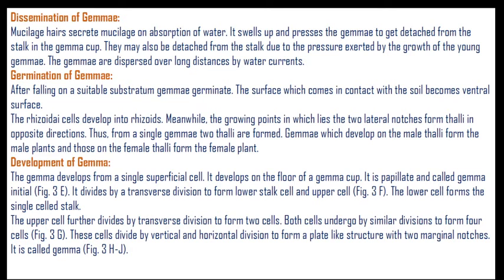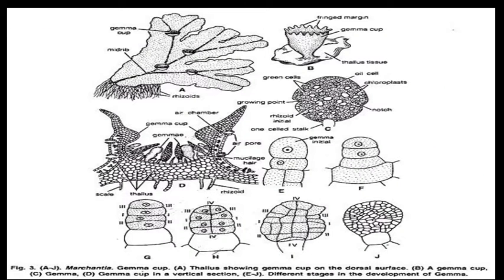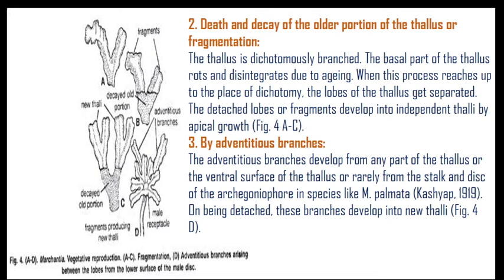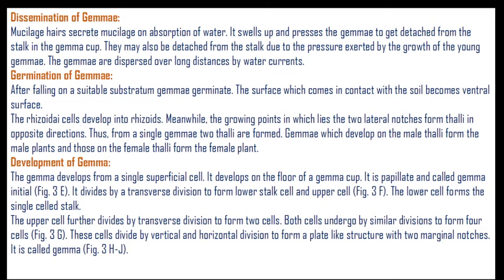The gemma develops from a single superficial cell on the floor of the gemma cup, called the gemma cell initial. It divides by transverse division into a lower stalk cell and an upper cell. The lower cell forms the single-cell stalk. The upper cell further divides by transverse division to form two cells, which undergo similar divisions to form four cells. These cells divide by vertical and horizontal division to form a plate-like structure with two marginal notches, called a gemma.